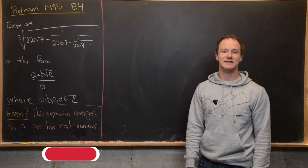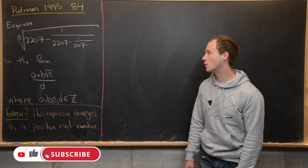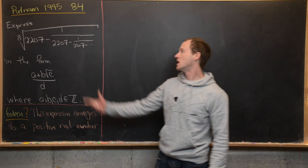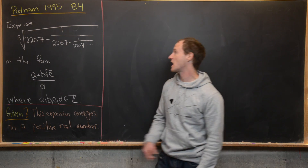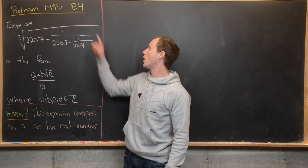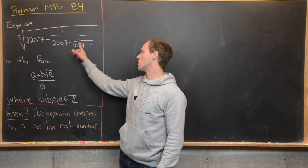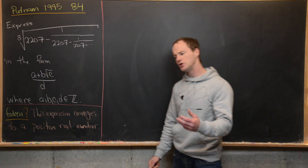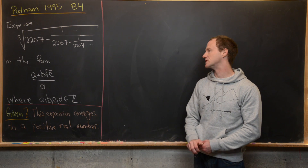Here we're going to look at a nice problem from the 1995 Putnam exam. This is question B4 and our goal is to express the eighth root of a continued fraction. The continued fraction is 2207 minus 1 over 2207 minus 1 over 2207 and so on. You can write that as some sort of recursively defined sequence.